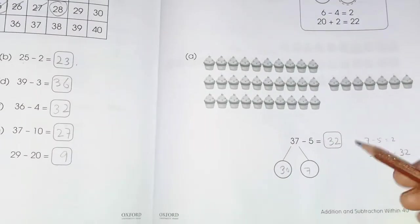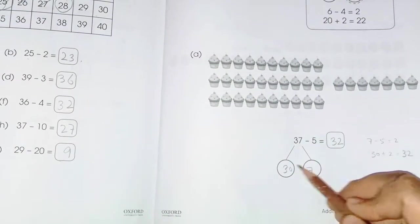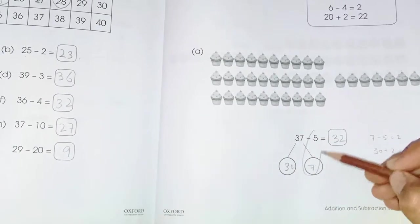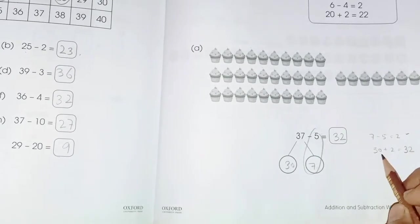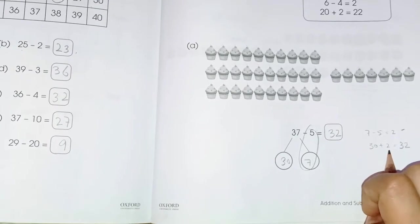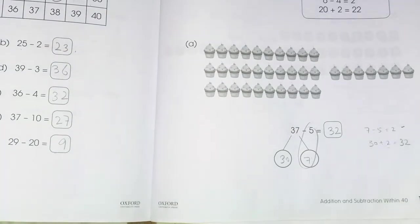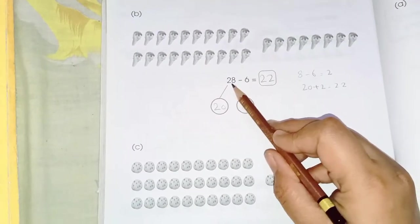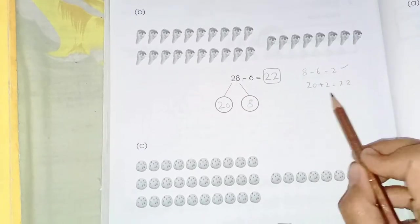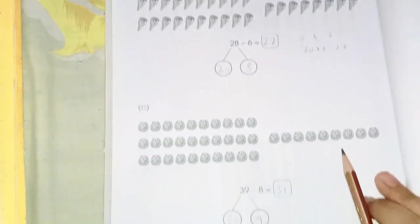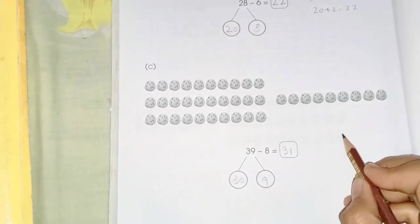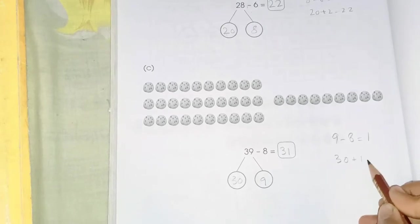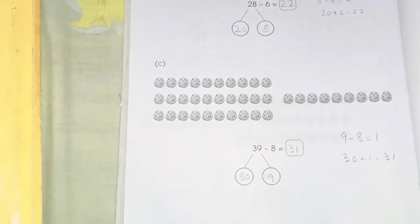Page 193: same method — we separate the tens and ones. For 37 minus 5: separate into 30 and 7; then 7 minus 5 is 2; then 30 plus 2 is 32. For 28 minus 6: separate into 20 and 8; 8 minus 6 is 2; 20 plus 2 is 22. For 39 minus 8: separate into 30 and 9; 9 minus 8 is 1; 30 plus 1 is 31.